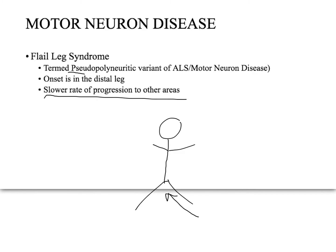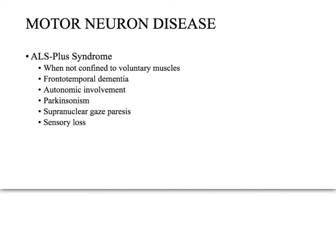Flail leg is sometimes called the pseudopolyneuritic variant of ALS or motor neuron disease. When involvement extends beyond motor neurons, it is called ALS plus syndrome. A key feature is frontotemporal dementia, and some experts think the same mechanism driving ALS also drives dementia. ALS plus can also include autonomic Parkinsonism, supranuclear gaze paresis, and sensory loss.